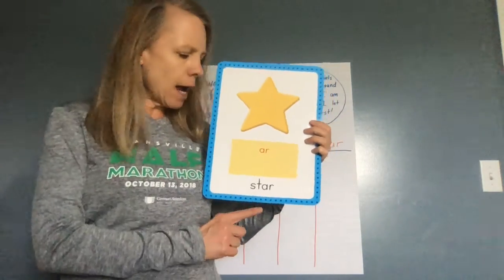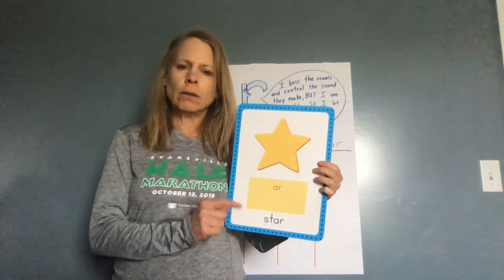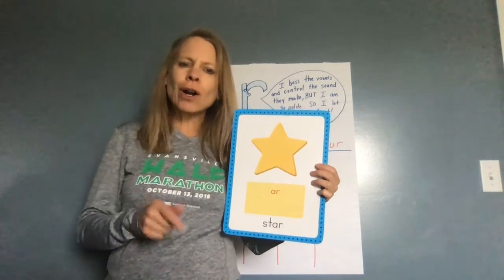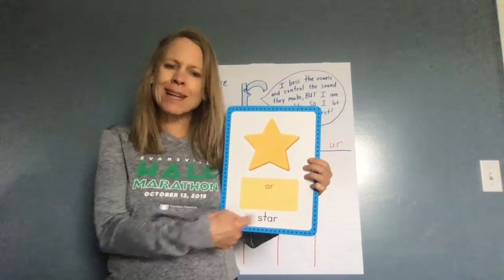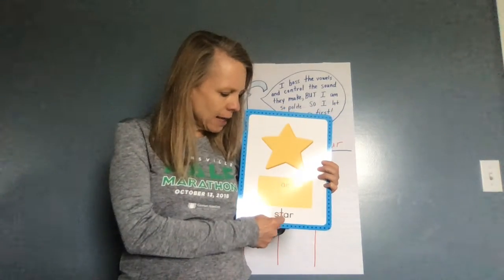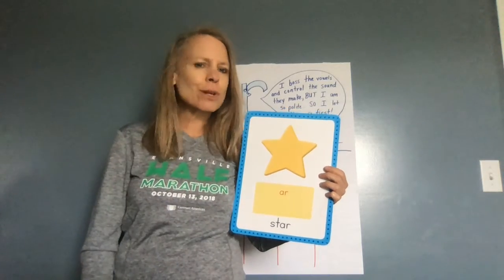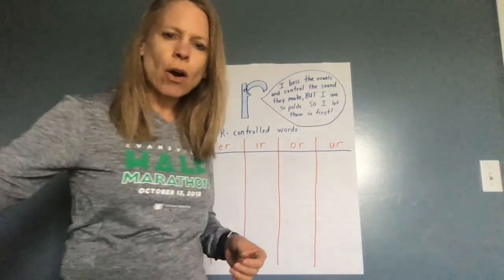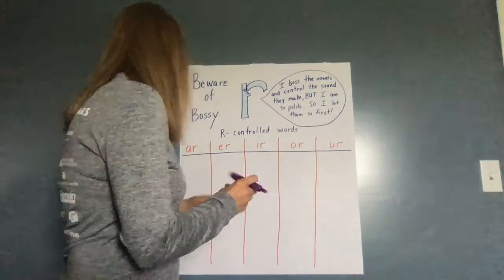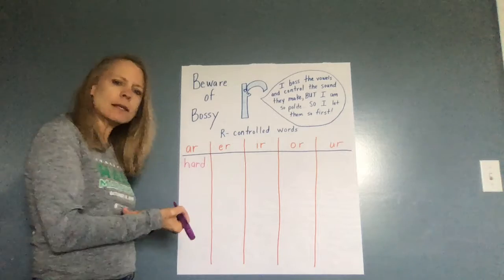Up here it says 'Beware of the bossy R' — every time an R is behind a vowel it makes the vowel say something different. At the top it says 'I boss the vowels and control the sound they make, but I am polite so I let them go first.' So when I look at A and R together, it's going to say 'ar' like in star. The way I code it is I draw a smiley face underneath the A and R to help remember those two letters go together to make one sound. Now there are certain words that have this AR sound, like the word hard — H, A, R, D. Say this sound with me, ready?